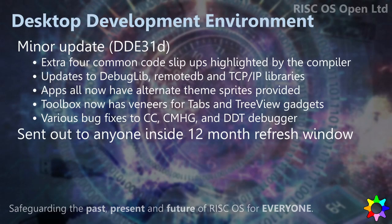Next up, I just want to talk a little bit about the development environment. We've been selling this for many years now and we've given it a bit more work recently. At the show now, we've just released the latest version, 31D. There are a few other useful warnings in the compiler now which catch some common issues — mistakes that programmers can make in their code. We've also carried along a load of fixes into the main tools, which are general bug fixes in the compiler. Lots of things that have been identified in our bug tracker have been addressed. We've also released new toolbox gadgets for tree view and tabs, and we've added some new veneers into the libraries to allow you to access those through C.